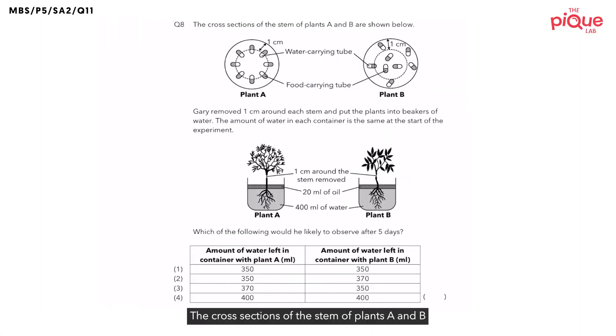The cross-sections of the stem of plants A and plant B are shown below. Gary removed a 1cm ring around each stem and put the plants into beakers of water. The amount of water in each container is the same at the start of the experiment. Now, what the question is asking us is to compare the amount of water that's left in the container with plant A with the amount of water that's left in the container with plant B.